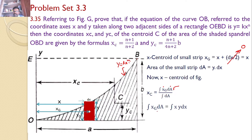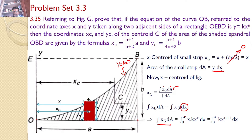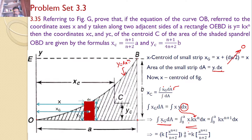First, we calculate the numerator ∫XG·DA = ∫X·Y·DX. Substituting Y = K·X^N, the X limits vary from 0 to A, giving ∫₀ᴬ K·X^(N+1) DX. After integrating, K is constant and X^(N+1) integrates to X^(N+2)/(N+2), so evaluated from 0 to A we get K·A^(N+2)/(N+2).